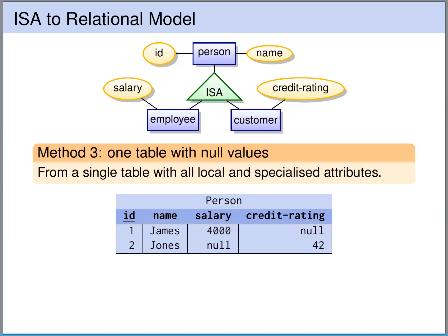The third method for translating the scenario is to only translate the higher-level entity. So we just create a table for person and include in this table all the lower-level attributes as well — the salary of employee and the credit rating. Clearly, then we have attributes in this table that are not applicable to every person, and for these attributes we simply fill in null values.